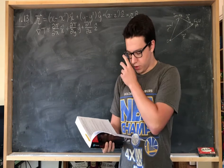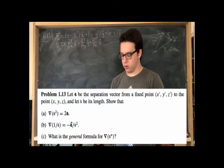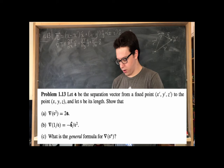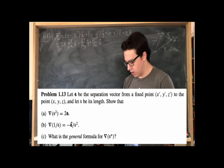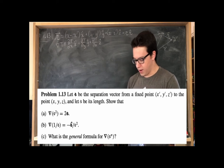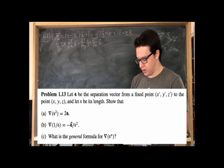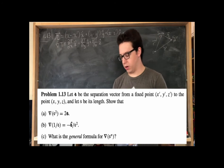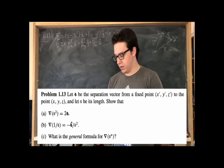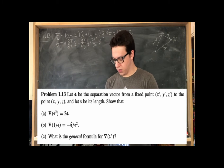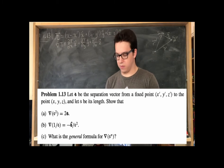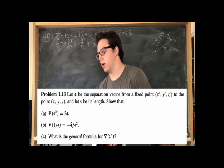This question says: let the vector script r be the separation vector from a fixed point x-prime, y-prime, z-prime to the point x, y, z, and let script r be its length. Show, starting with part a, that the gradient of script r squared is going to equal two times the vector script r.